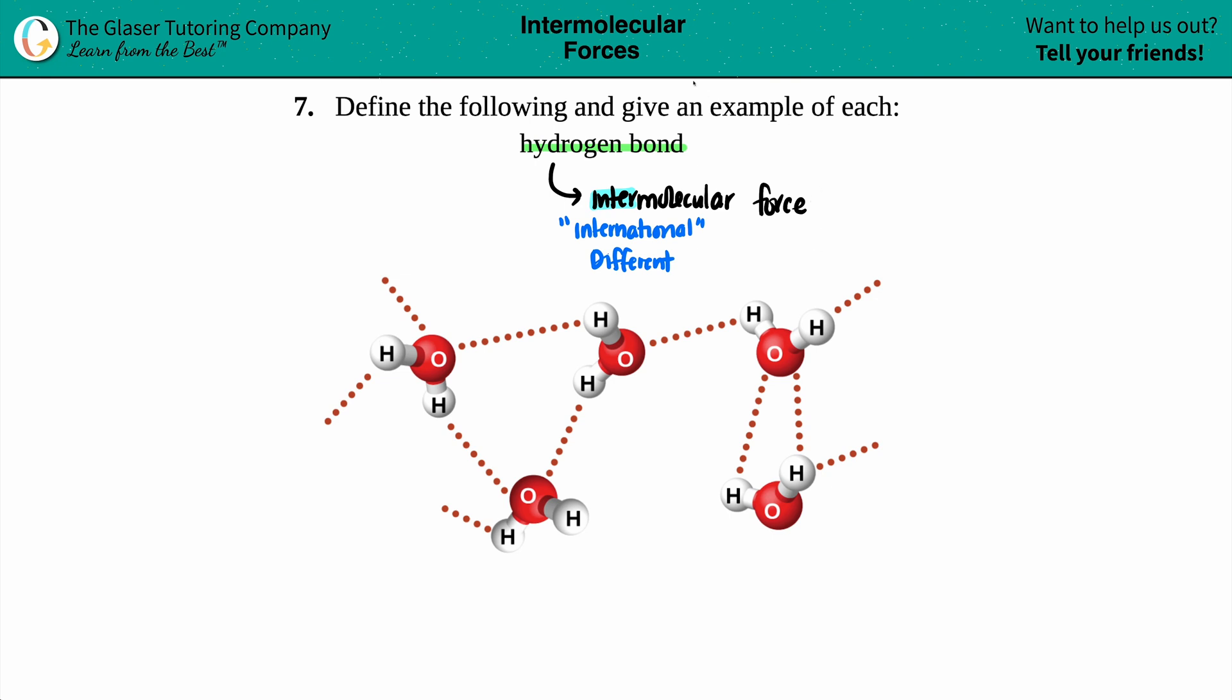So hydrogen bonding, by definition, is an intermolecular force in which a hydrogen that is either bound to three different options. Now, we're talking about a very, very, very polar bond. And to get polar bonds, it's got to come from the most electronegative elements.